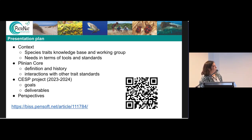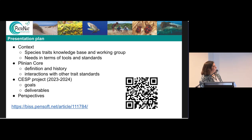I'll talk a bit about context — about the Species Traits Knowledge Base and its linked working group, and what are its needs in terms of tools and standards. Then I'll focus on the Plinian Core, its definition and history, and how it interacts with other trait standards. Then I'll finish with our joint CSP project, which is a GBIF-funded project for capacity enhancement that just began and is supposed to finish next year, and I'll give some perspectives on the work to come.